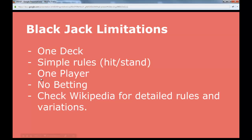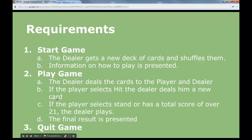Our basic requirements: to start the game, to play the game, and to quit the game. We have some details in these requirements. The dealer should get a new deck of cards when we start the game, and he should shuffle them — put them in some kind of random order. We should display information on how to play to the user. When we play the game, the dealer should deal cards to the player and to the dealer according to the rules. If the player selects to hit, the dealer deals a new card. If the player selects stand, or has a total score over 21, the dealer plays according to some rules. The final result is presented. And quitting the game is not that advanced, so no details there.